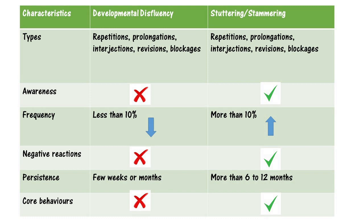The frequency of disfluencies in developmental disfluency is less than 10 percent — fewer than 10 disfluencies per 100 words spoken — whereas in children with stuttering it will be more than 10 percent. Children with developmental disfluencies show no negative reactions to speech, whereas children with stuttering may be surprised, frustrated, or even embarrassed by how they are talking.